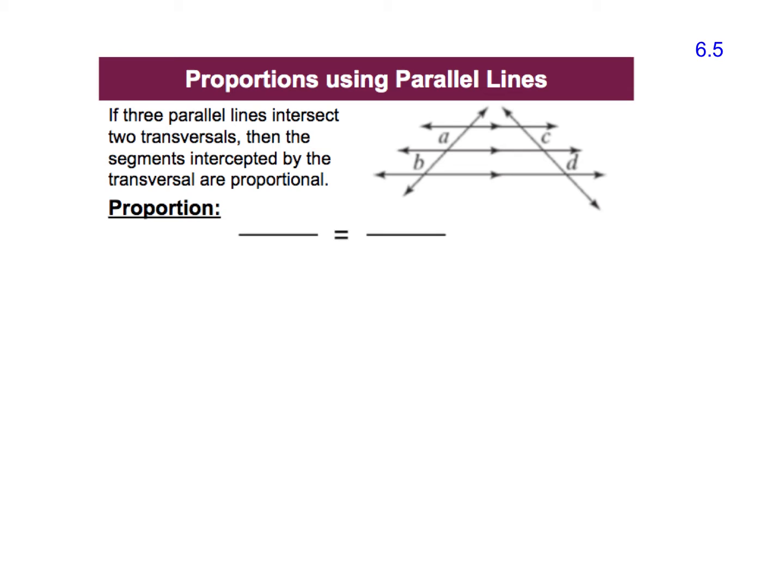So you can see in the diagram here that my two transversals that are intersecting the parallel lines are this one here and this one there. What this theorem tells us is that the segments intercepted on the transversals are proportional. So that A over B is going to be equal to C over D.